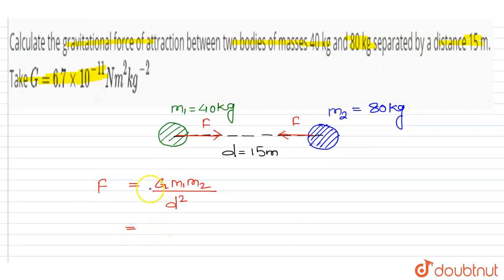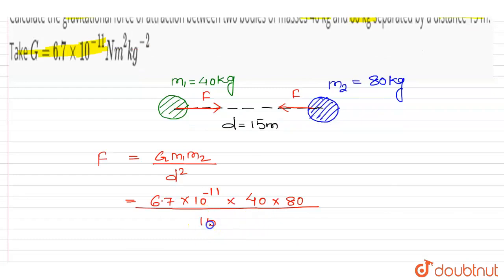This is equal to G, G value is 6.7 into 10 to the power minus 11, into m1, m1 is 40 kg, into m2, m2 is 80 kg, whole divided by d square, and d is 15 square.